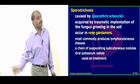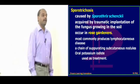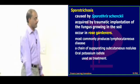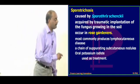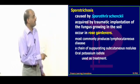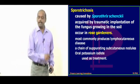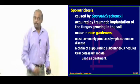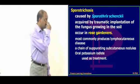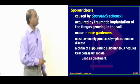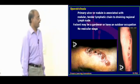A carpenter who came with a verrucous lesion — think of chromoblastomycosis. That is a very important buzzword. There will be development of lymphocutaneous lesions, and suppurative subcutaneous nodules will be part of sporotrichosis. Oral potassium iodide is going to be the treatment of choice.